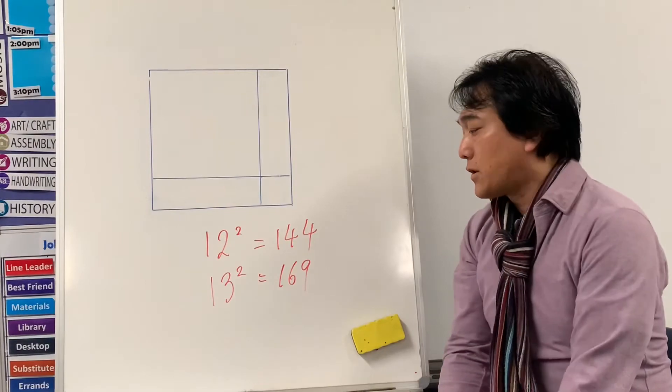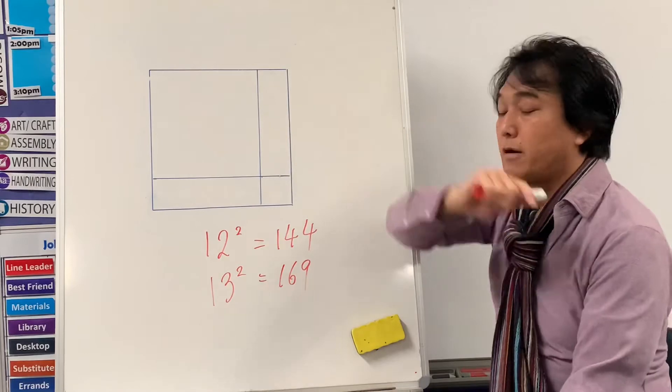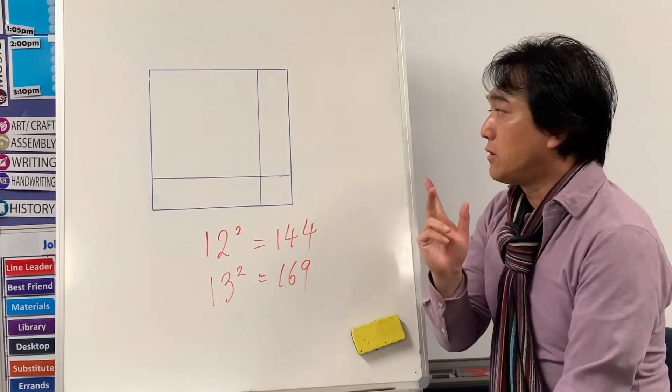So thirteen times thirteen is hundred and sixty-nine. There is hundred. There is thirty, thirty and nine there. So let's practice one more time.